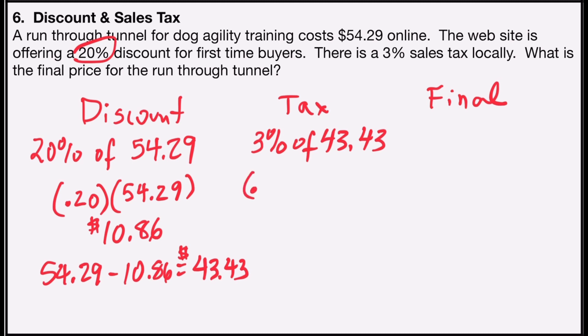Again, I'm going to write 3% as a decimal, 0.03, times $43.43. And if I punch that in a calculator, I find out that the amount paid in tax will be $1.30.